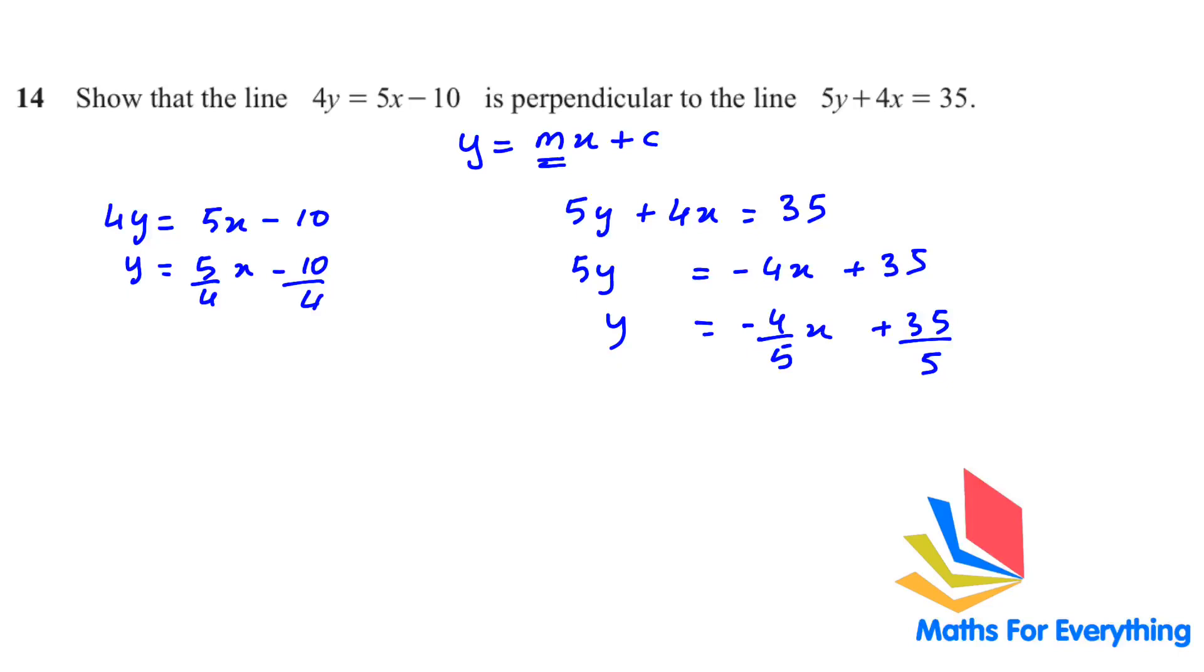When two lines are parallel, the gradients are same. So if two lines are parallel, the m will equal the m. But if two lines are perpendicular, then the gradient will be flipped over. So if you have the gradient 5 over 4, the perpendicular gradient will be 4 over 5, and the sign will change: negative 4 over 5. So that is the case here. This is 5 over 4 and this is negative 4 over 5. Therefore the two lines are perpendicular.